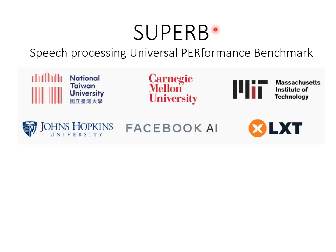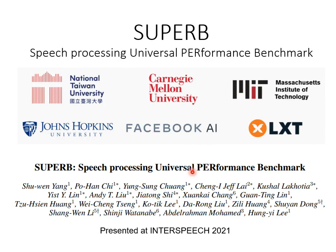This is the idea of Superb. Superb stands for Speech Processing Universal Performance Benchmark. The members of this project are not only from National Taiwan University, but also from CMU, MIT, Johns Hopkins, Facebook AI, and LXT. This year we published a paper about this benchmark at Interspeech. If you have any further questions about the following experiments, you can check our paper published at Interspeech.